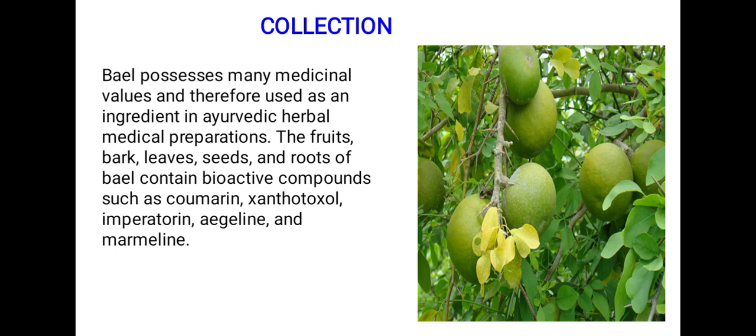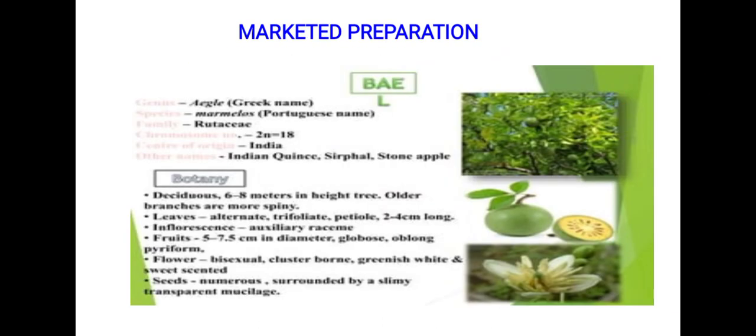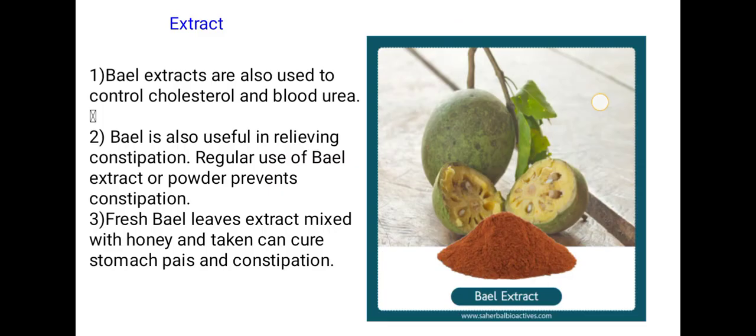Medicinal properties: the fruit, bark, leaves, seeds, and roots of Bael contain bioactive compounds such as coumarins, xanthotoxin, imperatorin, aegeline, and marmelosin. Bael extracts are also used to control cholesterol and blood sugar levels.